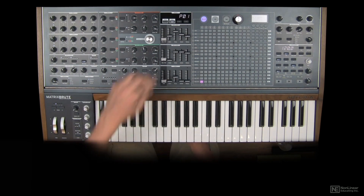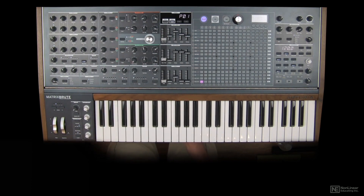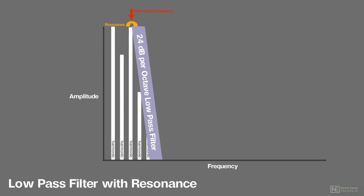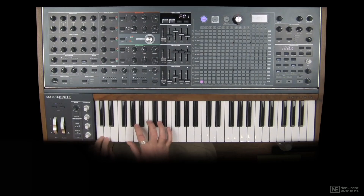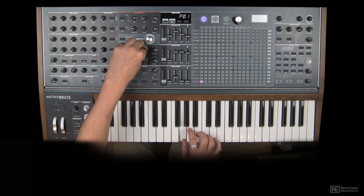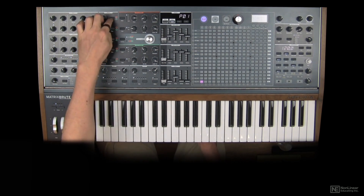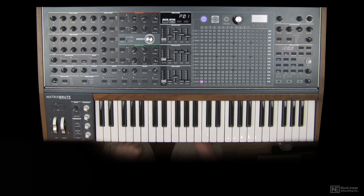But what if we wanted to emphasize bass frequencies? We could use the resonance, but by the time we get the peak that the resonance is generating at the filter cutoff down into the bass, we don't have really any timbre on top of it — we just have a sine wave-y sort of sound. That's providing bass, but that is not a great bass synth sound because there's no sound, there's just the bass. What we're going to talk about is how we can amplify bass frequencies with a filter.